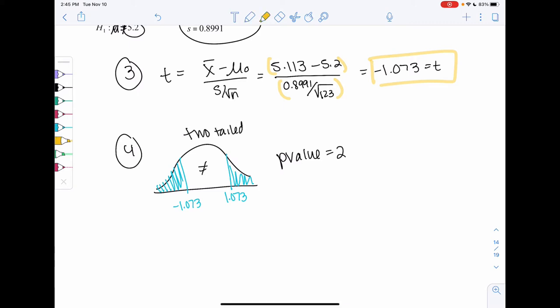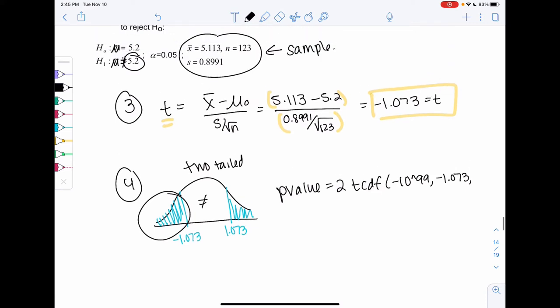We have a t-score, so we just use this new thing called t-CDF. We'll do lower, which is negative infinity, upper, negative 1.073. Degrees of freedom was n minus 1. N is 123, so degrees of freedom will be 122.